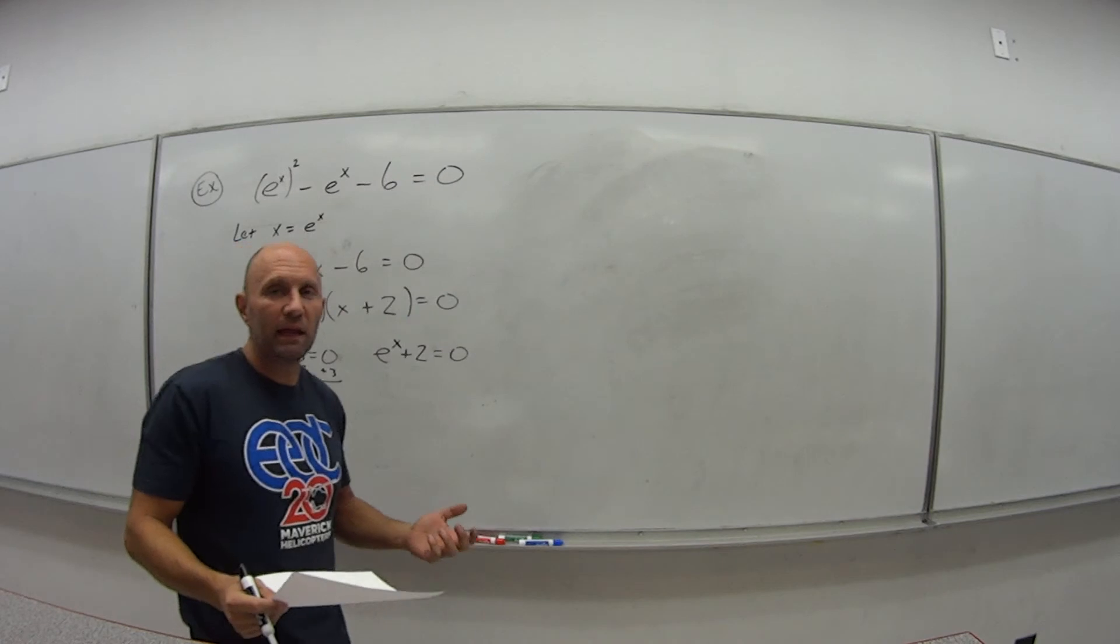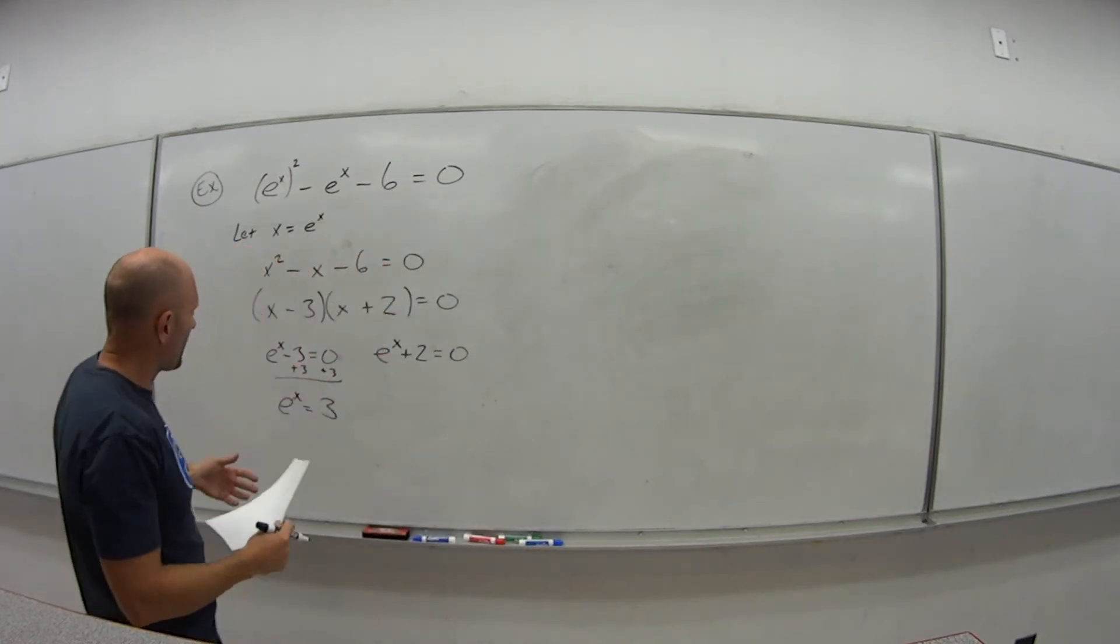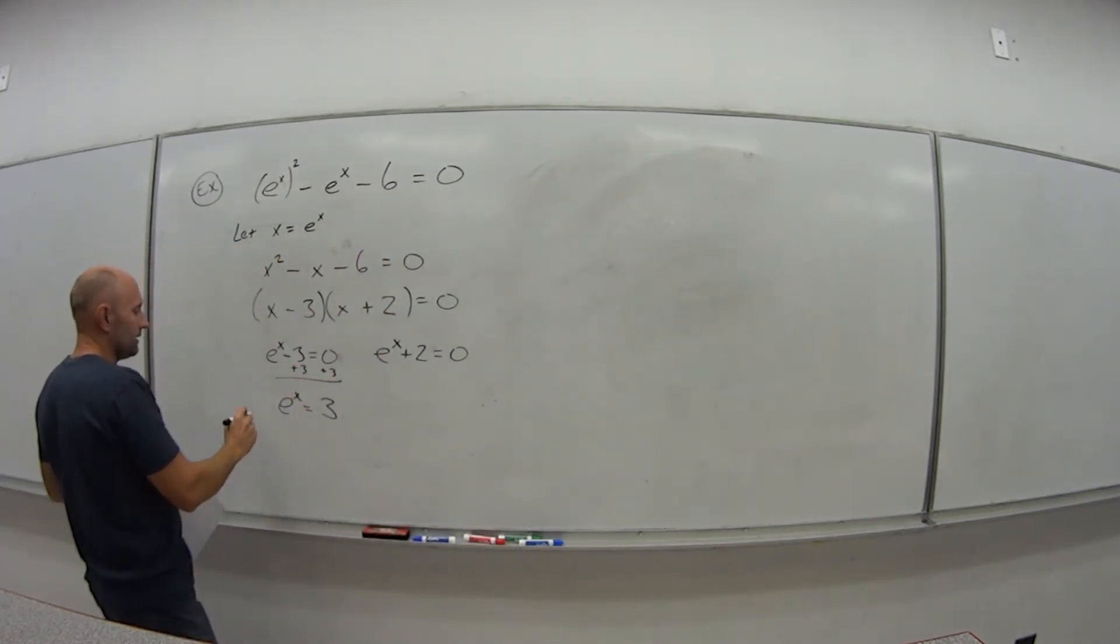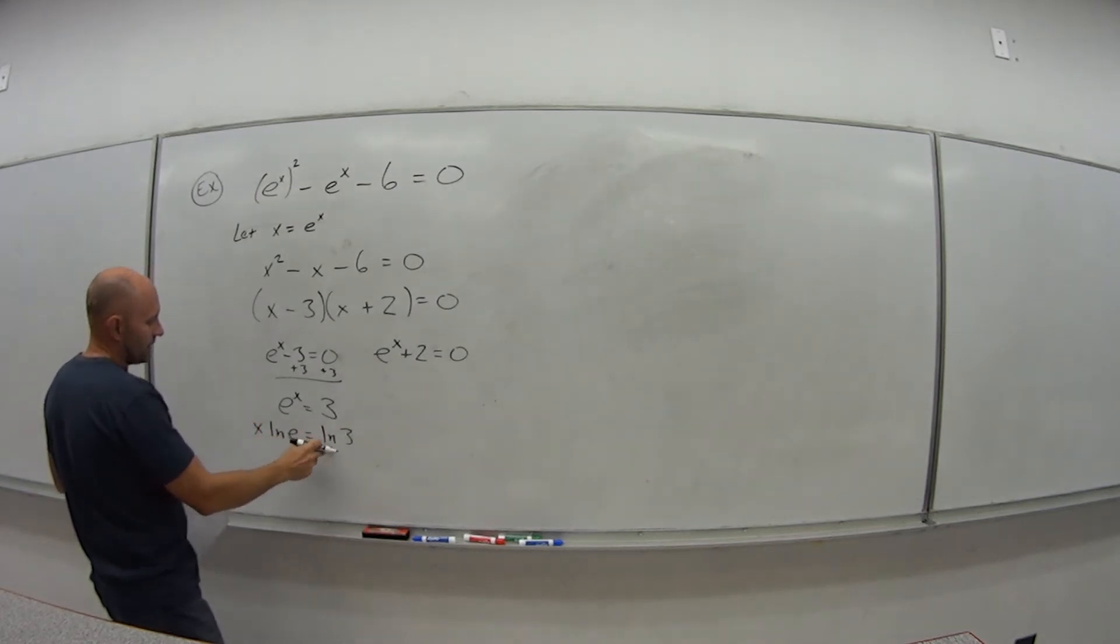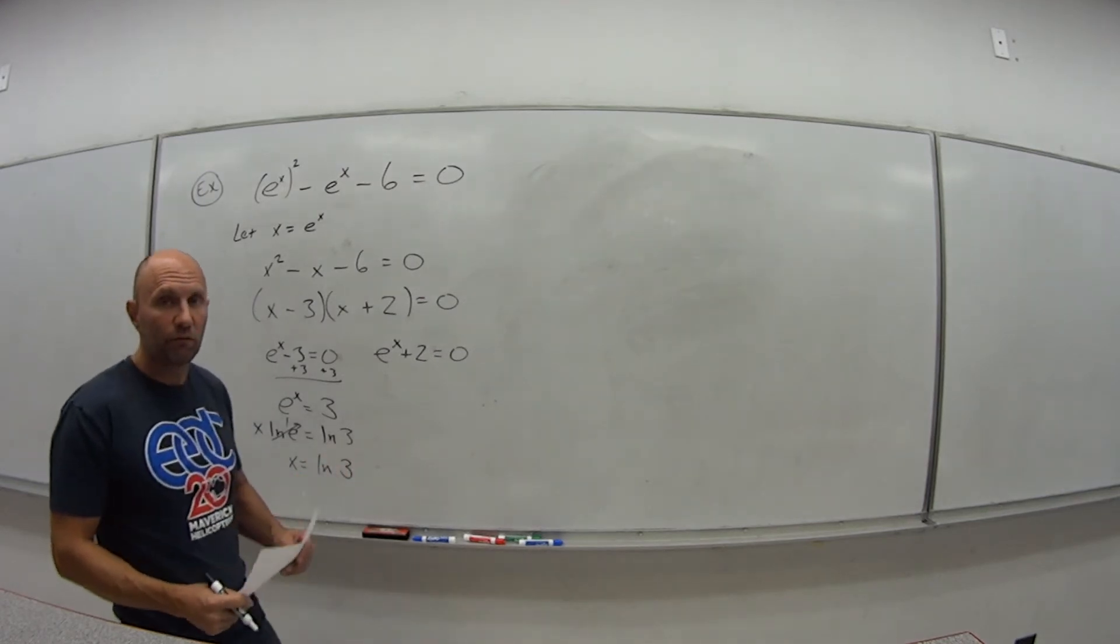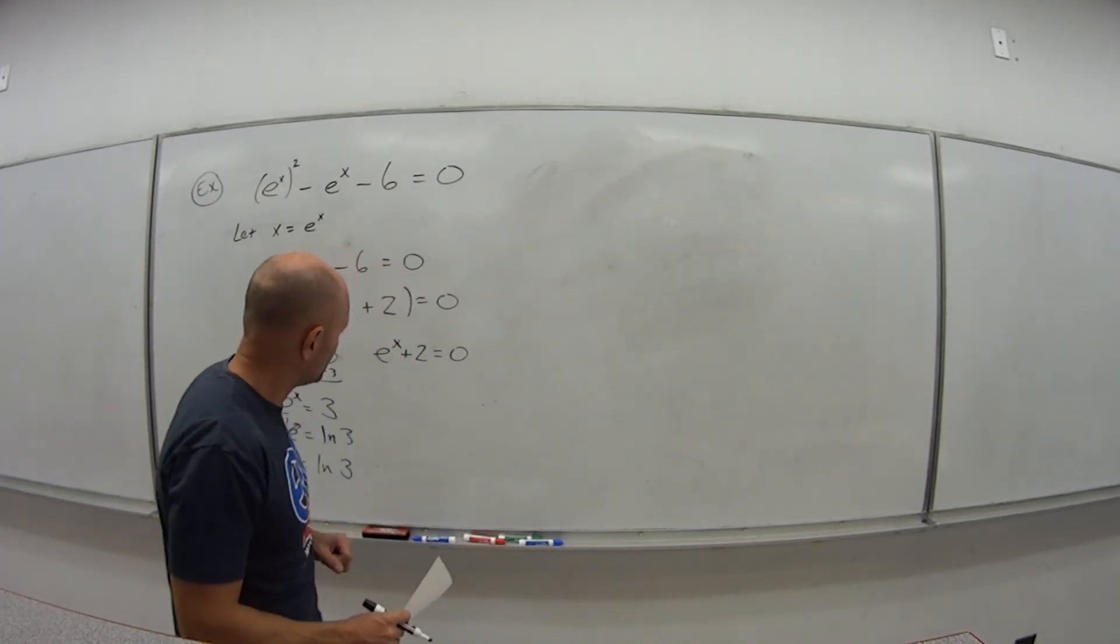So how do I get rid of that e? Well now I have the exponential isolated, so I can take natural log of both sides, bring the exponent down, the x. So I get x times natural log of e is natural log of 3. We know natural log of e is 1. So that just means from this piece, x is equal to the natural log of 3.